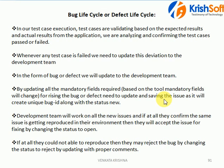How do the development people know you have raised a bug, and how do you know whether they have fixed it or not? These things usually happen in tools. Different tools are available — you can use Bugzilla, Testopia, TestLink, Quality Center, ALM (Application Life Cycle Management), TFS, and many other licensed tools. Everybody has their own credentials to log in, and they can see the status of each particular bug.